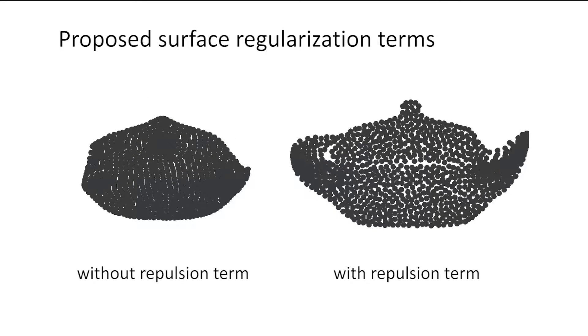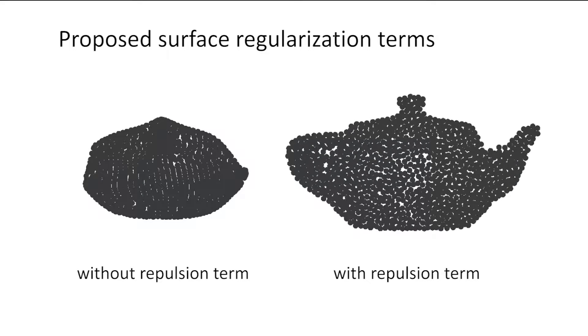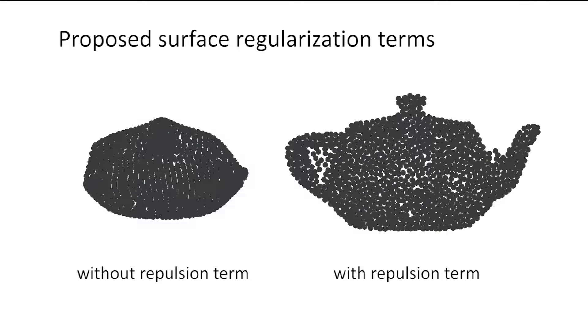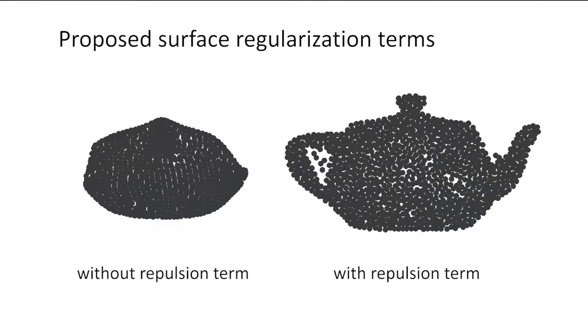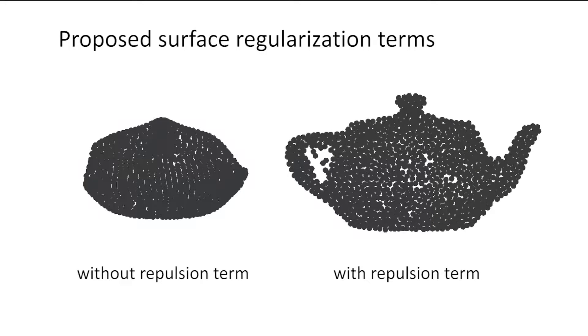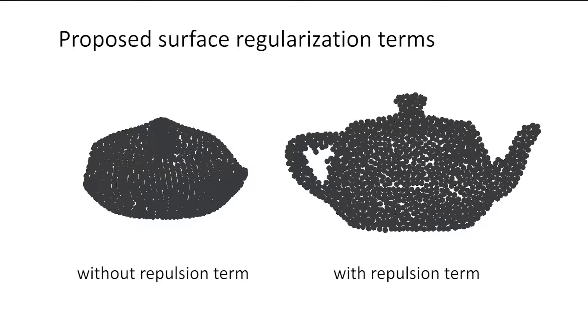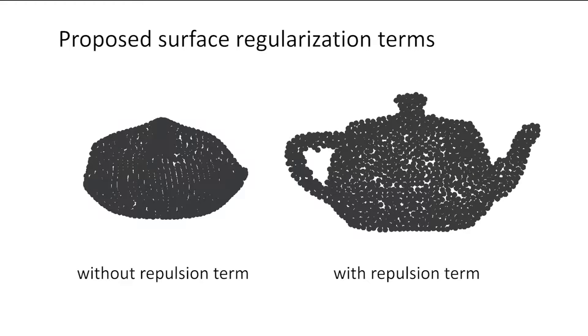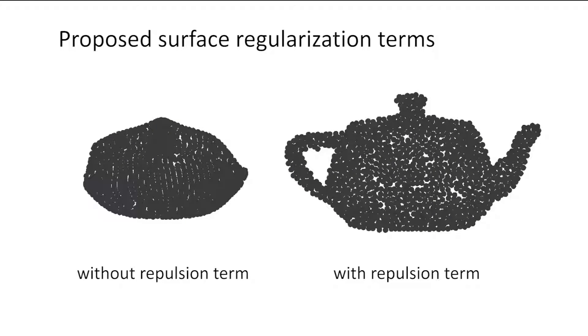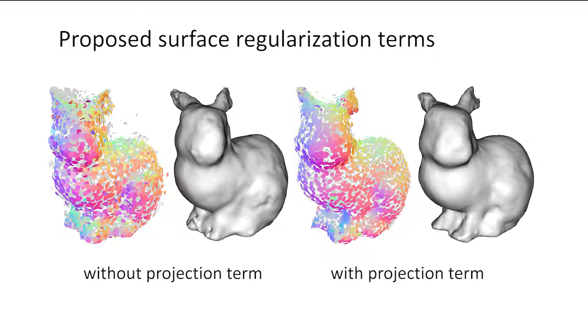We assume no hard-wired connectivity or constraints. To get the most plausible geometry we propose two surface regularization terms, a projection term and a repulsion term. The repulsion term helps avoid local minima and enables a uniform point distribution. The projection term ensures that we form a smooth underlying surface.